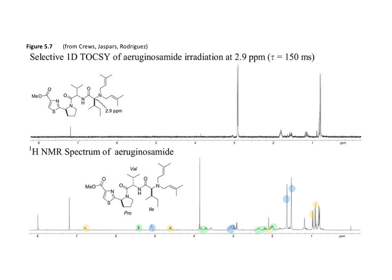The last 1D TOCSY spectrum will focus on irradiation of a doublet at 2.9 parts per million. This doublet at this position correlates with multiplets in the alkyl region, and then with a couple of methyl groups.